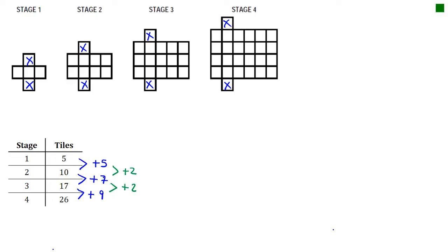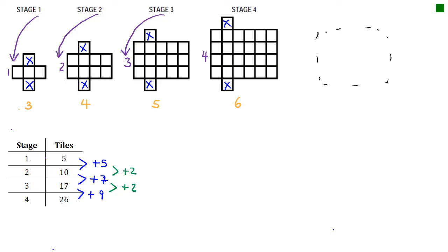I'm going to get the area of what's left. Looking along the bottom, we have 3 tiles wide for stage 1, 4 wide for stage 2, 5 wide for stage 3, and 6 wide for stage 4. Looking along the side, stage 1 has a height of 1, stage 2 has a height of 2, stage 3 has a height of 3, and stage 4 has a height of 4. The stage number matches perfectly with the number of tiles along the side, so the nth shape will need N along the side.